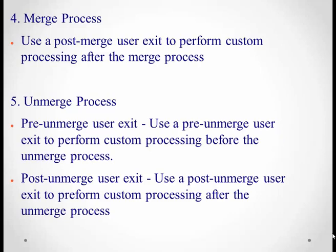The next is the merge process — combining or allowing multiple records to merge into one depending on the trust score. Use a post-merge user exit to perform custom processing after the merge process. For example, if two records get merged, the winner record will be in the base object and the cross-reference record will go into the cross-reference table. If you want to push the cross-reference record to a downstream system or another table, you can implement the post-merge user exit. Similarly, the unmerge process has two user exits — pre-unmerge and post-unmerge — which you can implement as per your business needs.